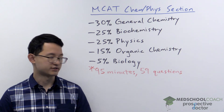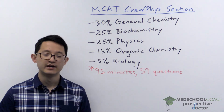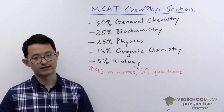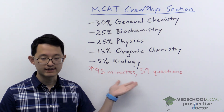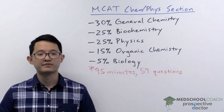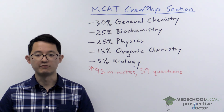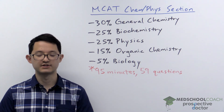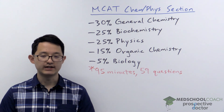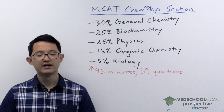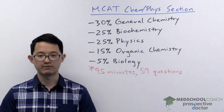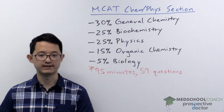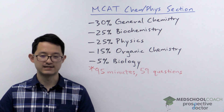One final reason the ChemPhys section is challenging is time pressure. The ChemPhys section is one of the sections students have the most trouble pacing, along with CARS. Running out of time is very common, so you have to learn to pace yourself. A helpful way to do this is to set checkpoints — for example, after passage eight you still want 20 minutes left, and after passage five you want 45 minutes left. If you set these checkpoints, you can detect early on if you're falling behind and pick up your pace, so you don't end up with two passages left and only seven or eight minutes remaining.